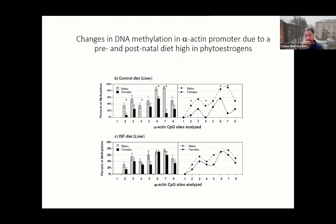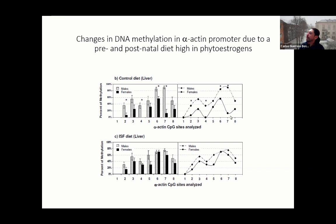A similar effect was observed in the methylation of the promoter region of a gene called alpha actin, measured in liver. In the plot, each number represents a CpG site indicating methylation. There is normally a natural sex difference in DNA methylation between males and females, but in the exposure group, that difference also disappeared.